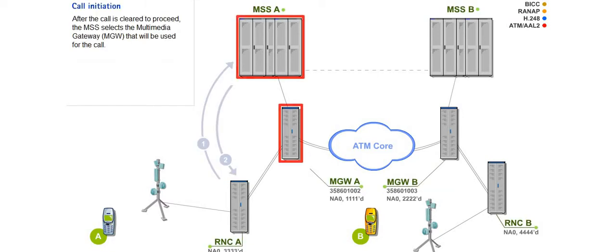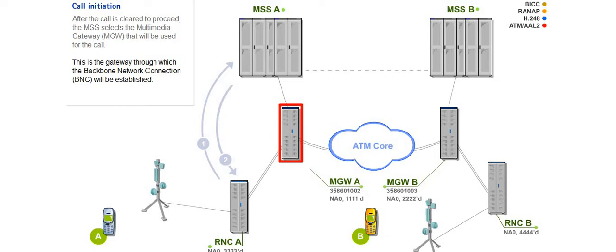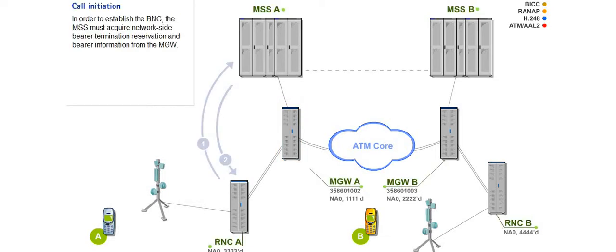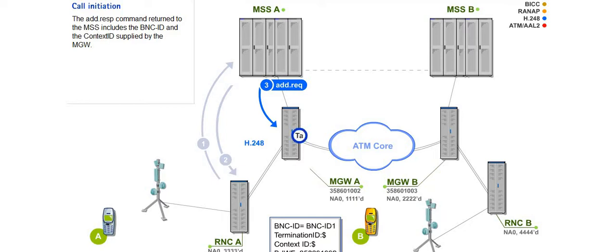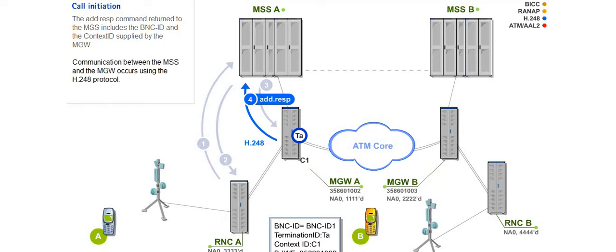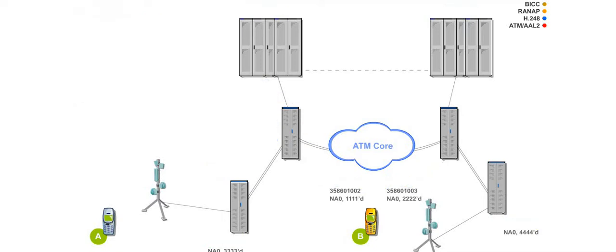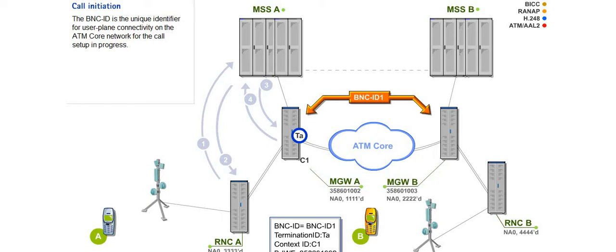After the call is cleared to proceed, the MSS selects the multimedia gateway, or MGW, that will be used for the call. This is the gateway through which the backbone network connection, or BNC, will be established. In order to establish the BNC, the MSS must acquire network side bearer termination reservation and bearer information from the MGW. The MSS initiates a prepare BNC notify transaction by sending an address request command to the MGW. The address response command returned to the MSS includes the BNC ID and the context ID supplied by the MGW. Communication between the MSS and the MGW occurs using the H248 protocol.